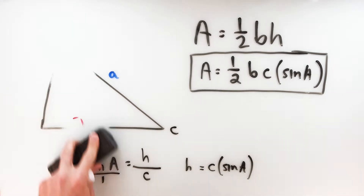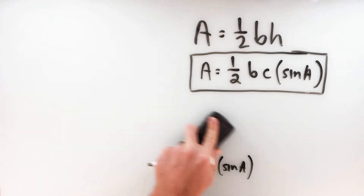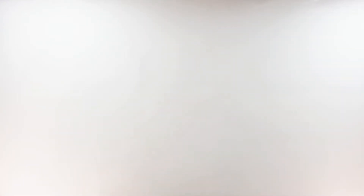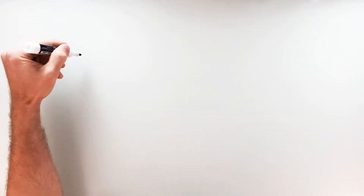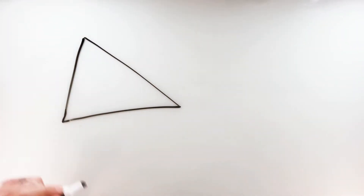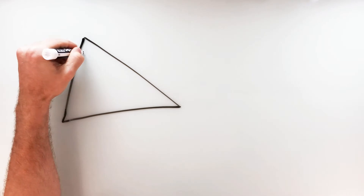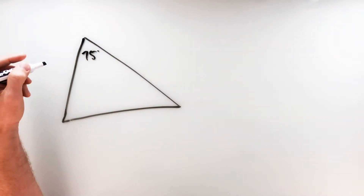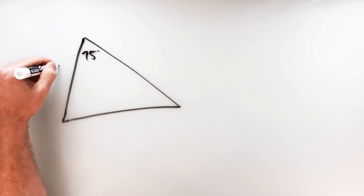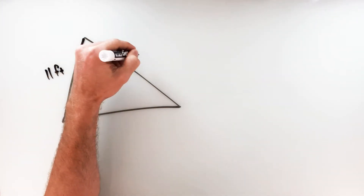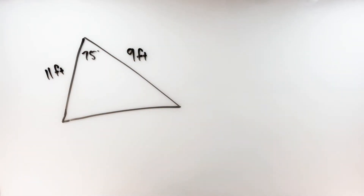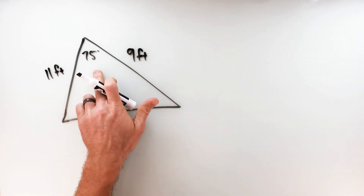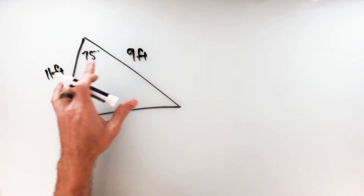Let's look at a quick example. Looking at a triangle where we've got a 75-degree angle, we know one side is 11 feet and the other side is 9 feet. This is exactly the situation we're looking for — we've got an angle of a triangle and the two sides around that angle, the angle included between those two sides.